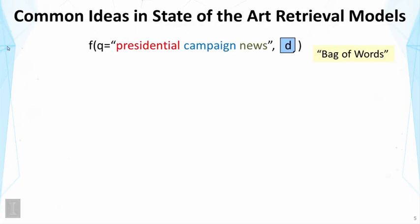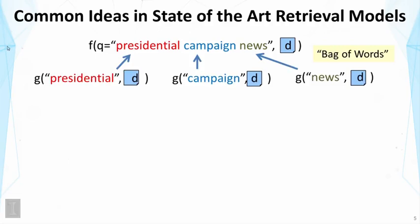So with this assumption, the score of a query like presidential campaign news, with respect to a document D here, would be based on scores computed based on each individual word. And that means the score would depend on the score of each word, such as presidential, campaign, and news. Here we can see there are three different components, each corresponding to how well the document matches each of the query words.